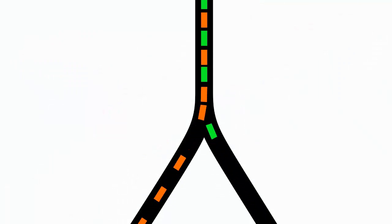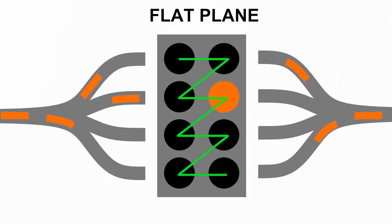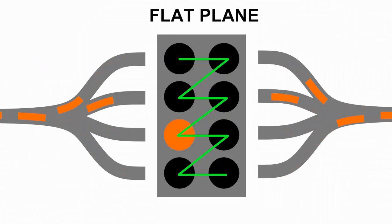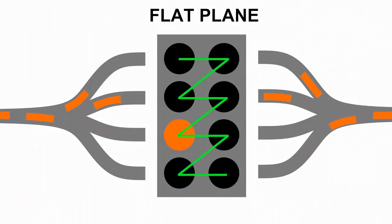When we look at the exhaust pulses coming out of each cylinder on this flat plane crank engine, you can see that they're timed almost perfectly, each pulse coming down the header to create a small vacuum behind it. This vacuum in turn helps to suck the exhaust out of the next cylinder, in an effect known as scavenging.